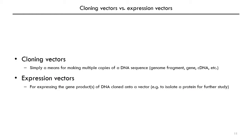Previously, we'd been talking mostly about vectors for cloning. Cloning simply means making multiple copies of DNA, either fragments of a genome, a single gene, or cDNA, or any piece of DNA that you want to make multiple copies of. Expression vectors are used for making gene products — for example, if you have a gene and you want to produce the protein that is encoded on that gene. Expression vectors can also be used for cloning, but they have some key features that might not be present on vectors that are strictly used just for cloning.